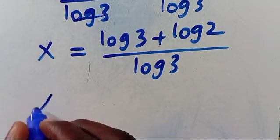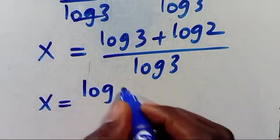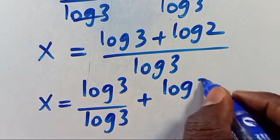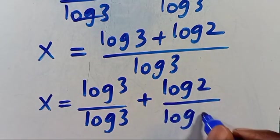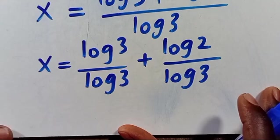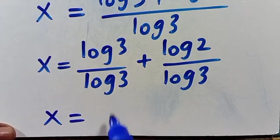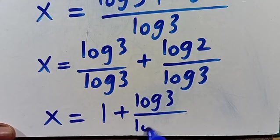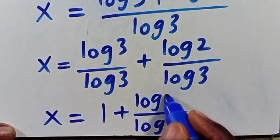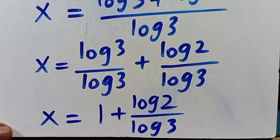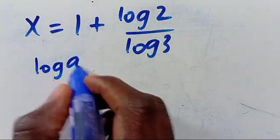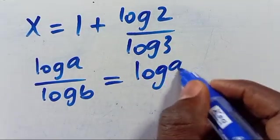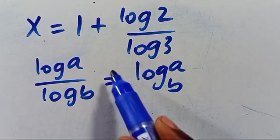So we have X equal to log 3 divided by log 3, plus log 2 divided by log 3. Log 3 divided by log 3 gives us 1, and log 2 divided by log 3 equals log base 3 of 2. So X equals 1 plus log base 3 of 2.